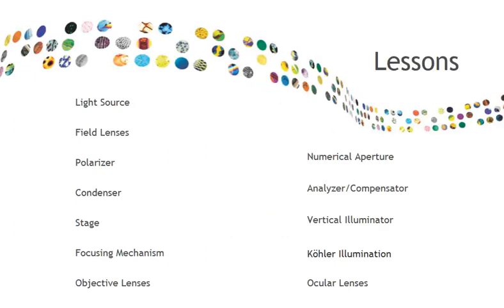In this series of learning modules on basic microscopy, viewers are introduced to the basic principles of the microscope and how to use it properly. Each short lesson covers a different component of the microscope, beginning with an overview of the history and then moving on to lessons that describe the parts of the modern microscope and its use. We begin at the light source and follow the light through the microscope until it emerges from the ocular lens. Visit our website for information on these lessons and more.